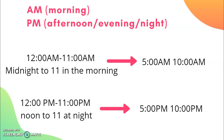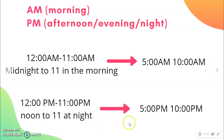When do we use PM? From 12 PM to 11 PM — from noon to 11 at night. So we use PM from noon to 11 o'clock at night. For example, if I see 5 PM, I know that is 5 o'clock in the afternoon. And if I see 10 PM, it means 10 o'clock at night.